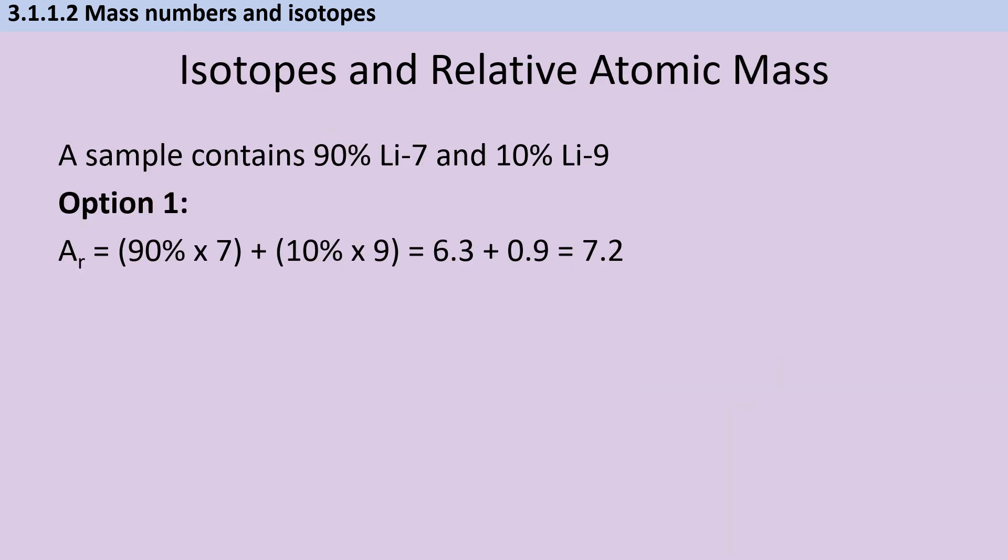When it comes to this kind of question, there are three mathematical approaches that you can take for working out relative atomic mass from percentage abundance data. They're all equally valid, although you may have a personal preference. In the first approach, I use the percentage button to work out 90% of 7 and 10% of 9. Personally, I find that this is the one that is most likely to go wrong if students are not familiar with their own calculator.